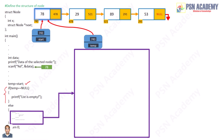So we write: while temp not equal to null — if start->x equals data, then we have to make start equal to start->next. That means start->next is 478 here, pointing to the second node. So start next is actually 478, and start is now 478, starting to point to the second node in the list.